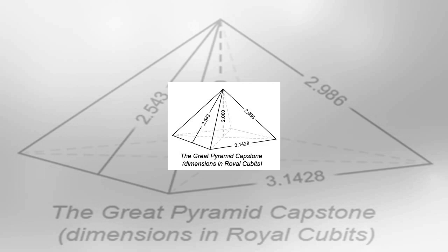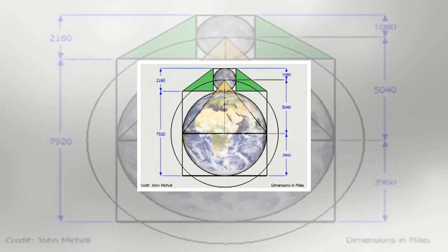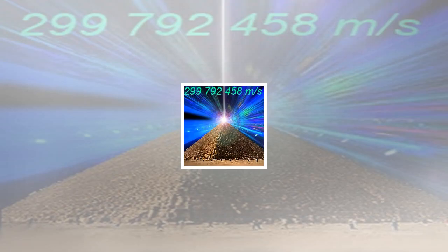Royal cubit 0.5236 meters times pi÷Phi² equals 0.5231 and more. Does Great Pyramid encode fractal value of the speed of light? The speed of light in a vacuum is 299,792,458 meters per second and 983,571,056.43 feet per second or 186,282.397 miles per second.